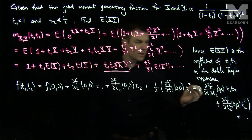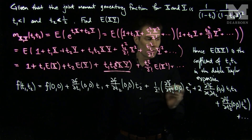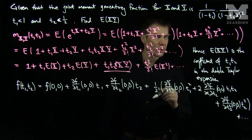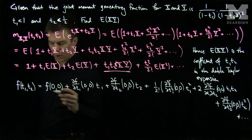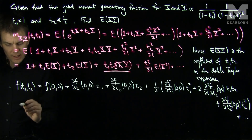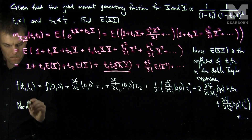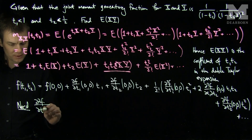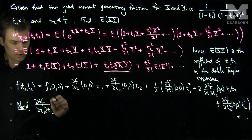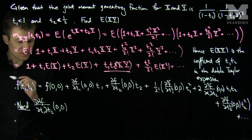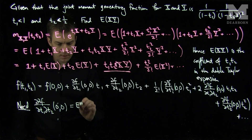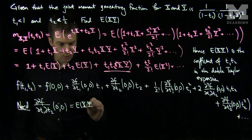We notice that the coefficient of t1*t2 is exactly the second mixed partial derivative of f with respect to t1 and t2, evaluated at 0. So what we need to compute is the partial squared f over partial t1 partial t2 evaluated at (0, 0), and that will give us the expected value of x times y.